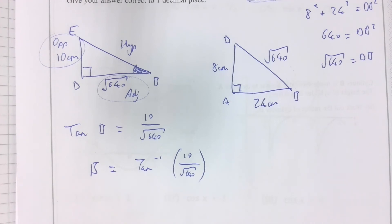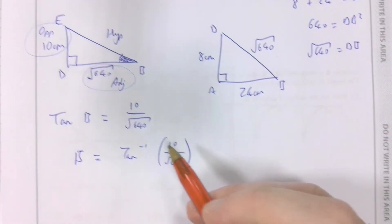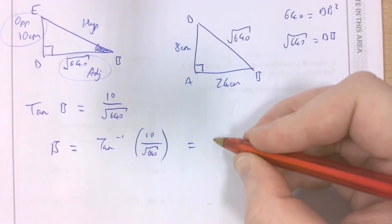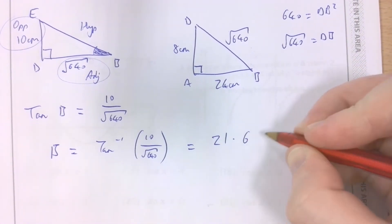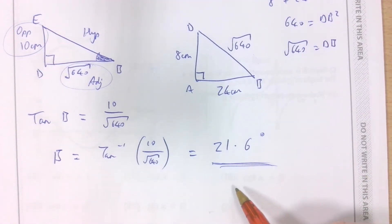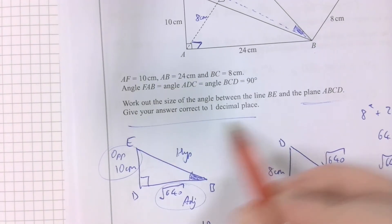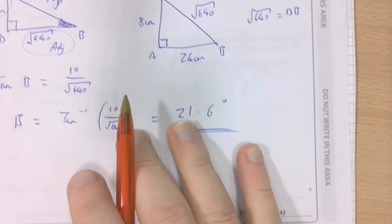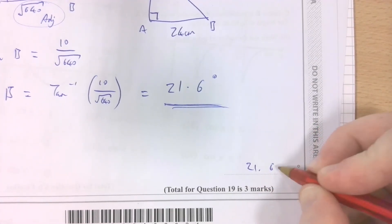I get the final answer to be 21.6 degrees. Why do I round it to one decimal place? Because the question asked me to. So, that's my answer. 21.6.